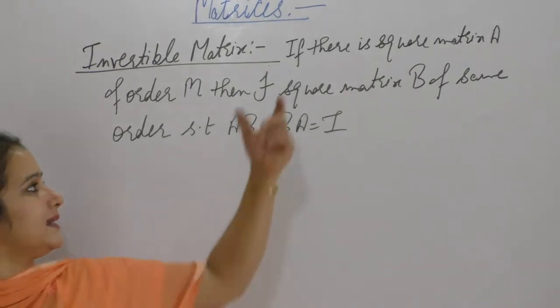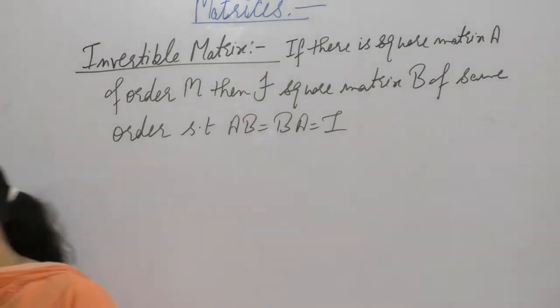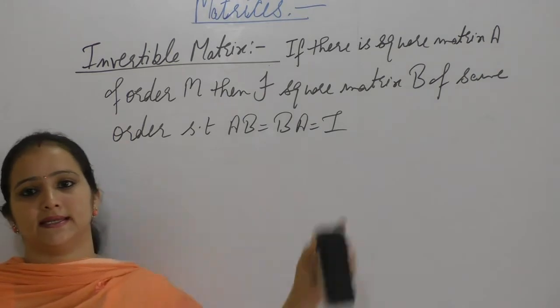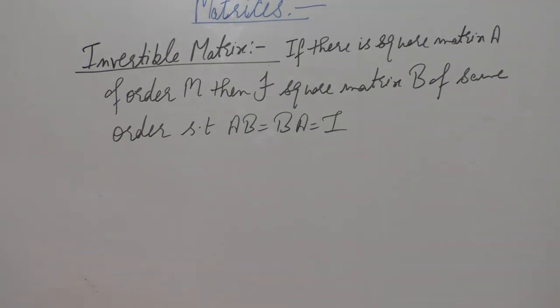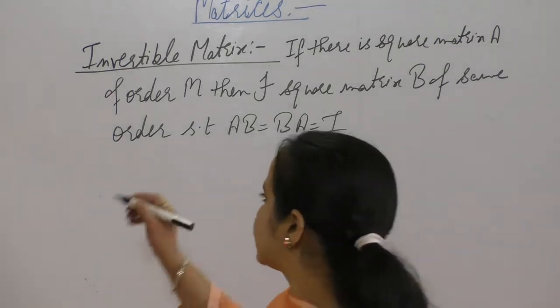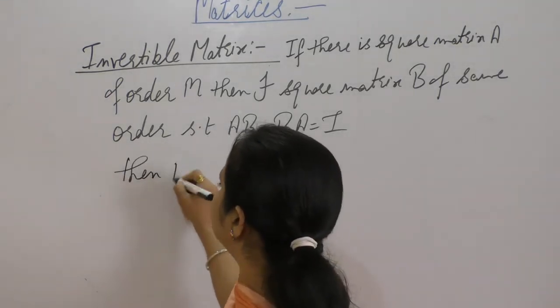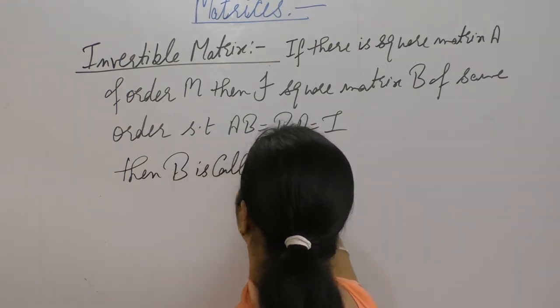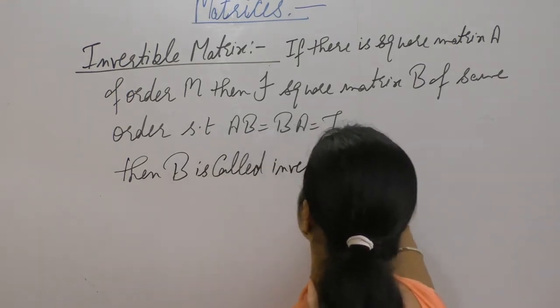If there is a square matrix A of order M and there exists another square matrix B of same order, such that AB is equals to BA is equals to identity matrix, then B is called inverse of matrix A.